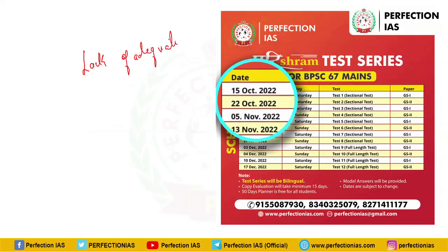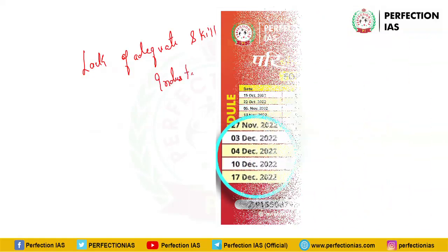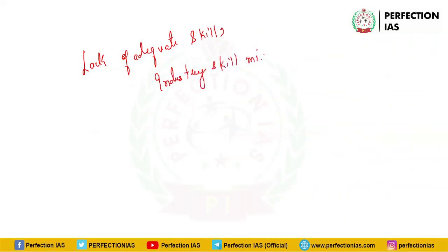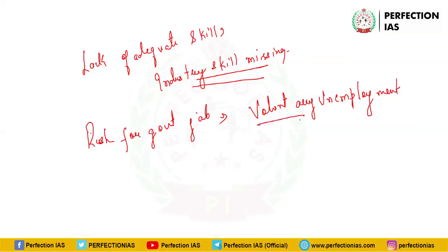Another major issue the Indian economy faces is lack of adequate skills — we are not able to meet industry's needs because industry-required skills are missing, causing unemployment. Then there is the rush for government jobs — the lucrativeness of government jobs leads people to voluntary unemployment, meaning they won't do any job while preparing for government jobs, choosing to remain unemployed voluntarily. Last but not least is lack of investment by both the public and private sector.